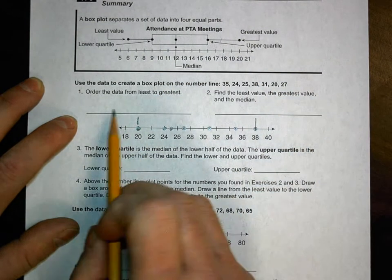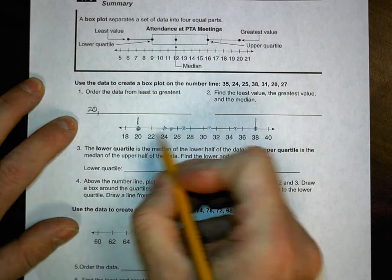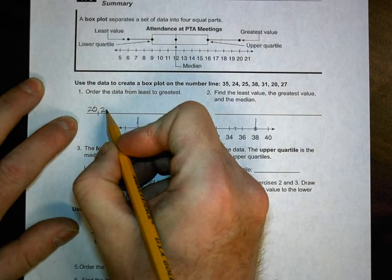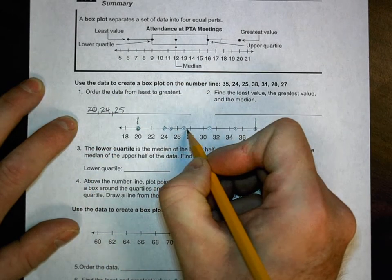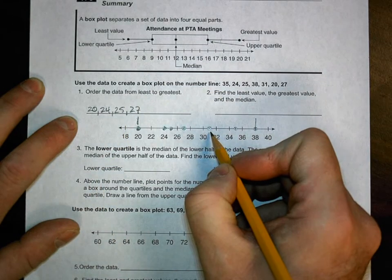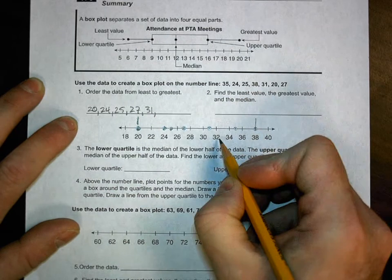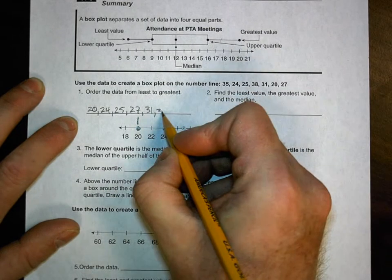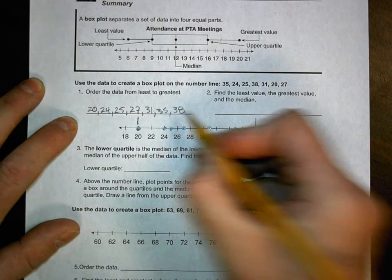But now I can quickly do this ordering the data. All I got to do is pull off the dots. So 20, 24, 25, 27, 31, 35, and lastly 38. So I've got all my data.